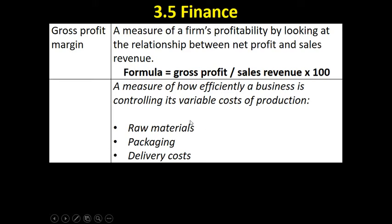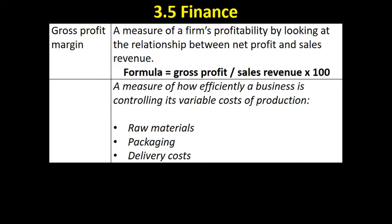Gross profit margin is a measure of how efficiently a business controls its variable costs of production — so raw materials, packaging, and delivery costs. For example, if a business works out their gross profit margin and in 2016 it's 15% but in 2017 it's 10%, it's gone down by 5% over the course of the year. That indicates there has been some sort of increase in raw materials, packaging, or delivery costs, and the business hasn't been able to pass on this increase to its customers.